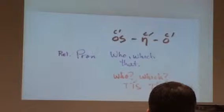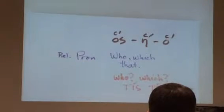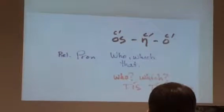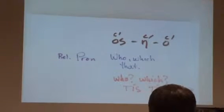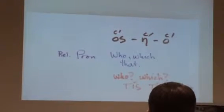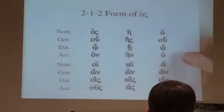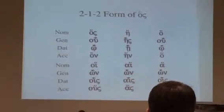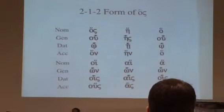The relative pronoun will be hoss, haw, with the rough breathing and the accent. You'll notice that it looks just like 2-1-2 endings with nothing else there — you just add the rough breathing. And sure enough, the relative pronoun is exactly that: the 2-1-2 endings with a rough breathing mark.